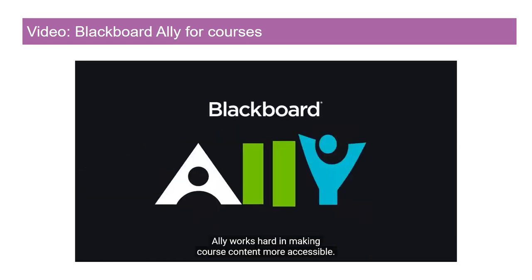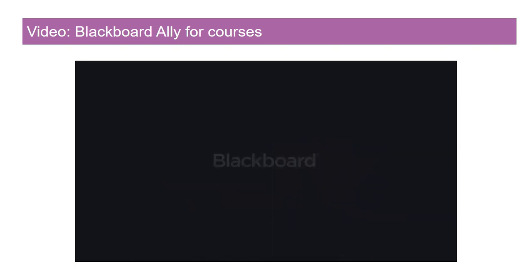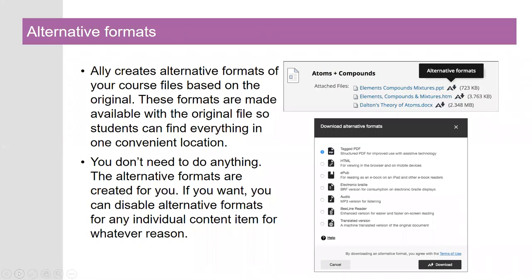Taking a closer look at the three ways Ally helps instructors make their course content more accessible. First, Ally creates alternative formats of your course files based on the original. These formats are made available alongside the original file uploaded to the course so students can find everything in one convenient location. As the instructor or instructional designer, you don't need to do anything. Once Ally is enabled in a course, the alternative formats are created for you. If you want, you can disable alternative formats for any individual content item.